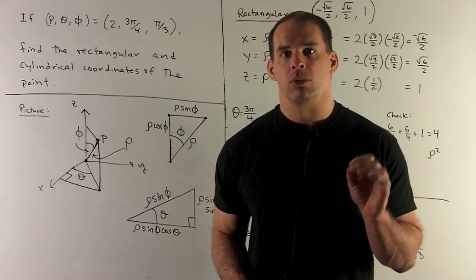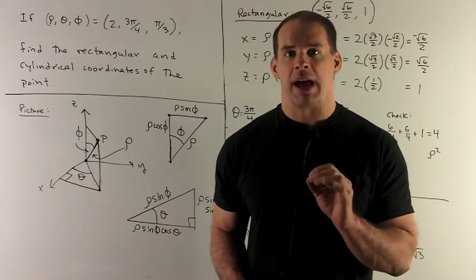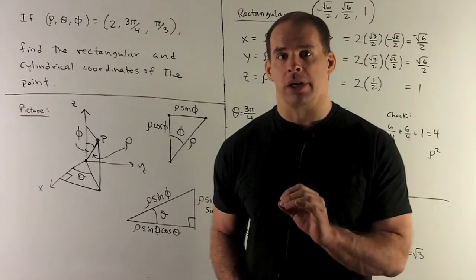Suppose we have the spherical point rho equals two, theta equals three pi fourths, phi equals pi thirds. Convert to rectangular and cylindrical coordinates.